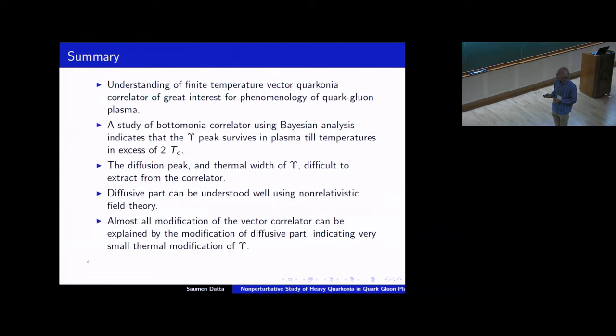Okay. So that brings me to my summary. So what I have presented is, try to study bottomonium correlator directly using Bayesian analysis, and then also look at the diffusion peak in a different way, and then get the information from the diffusion peak, plug it back to the correlator, to get further insight into the bottomonium correlator. The diffusive part can be understood very well using non-relativistic field theory, as I explained to you. And then, once you take into account the modification due to the diffusive part, that seems to be pretty much all the modification of the vector correlator, at least up to 1.5 Tc. So this indicates very small thermal modification of Upsilon. However, at this stage, cannot yet get the width which will be phenomenologically useful. Thank you.